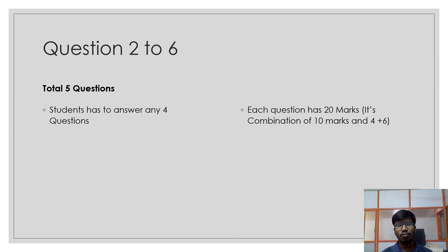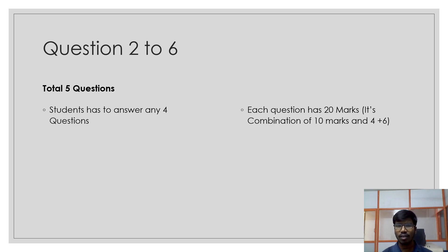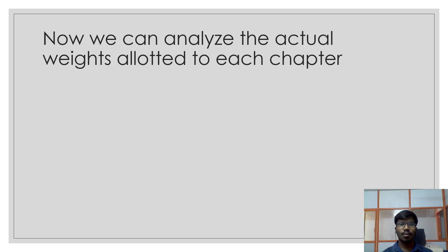After completing question 1, you have 5 remaining questions. Out of those 5 questions, you have to answer only 4. Each question carries 20 marks, and it will be a combination of 10 marks, 5 marks, 6 marks, or 5 plus 5 plus 10 — divided accordingly. Even if you write all 5 questions, they will consider only 4. So answer only 4 questions out of questions 2 to 6.